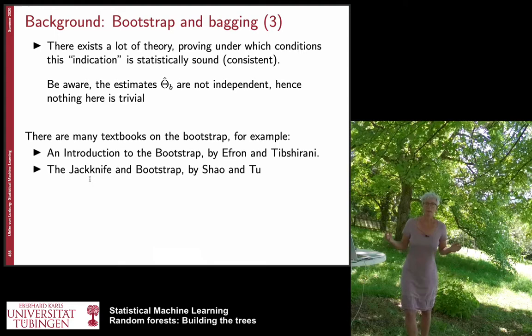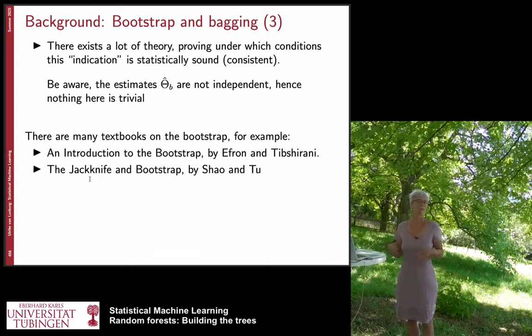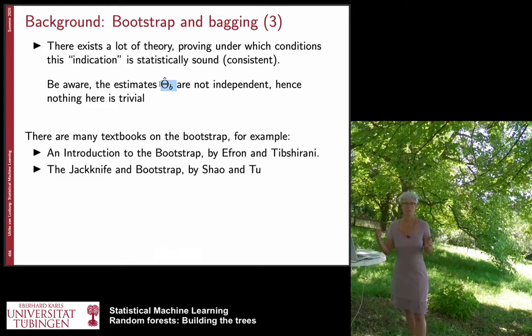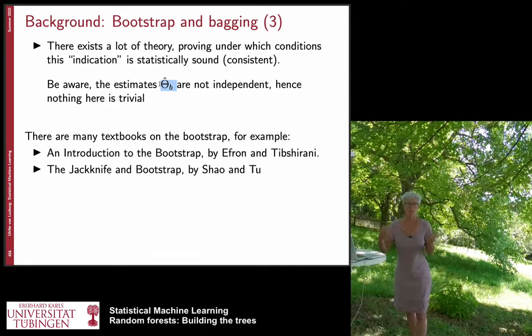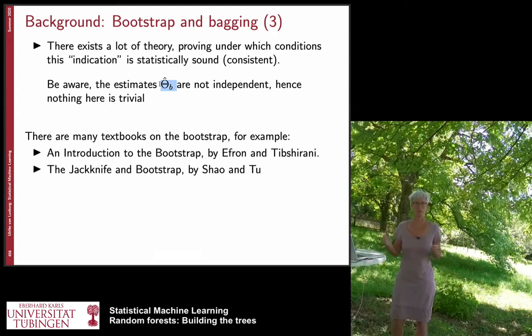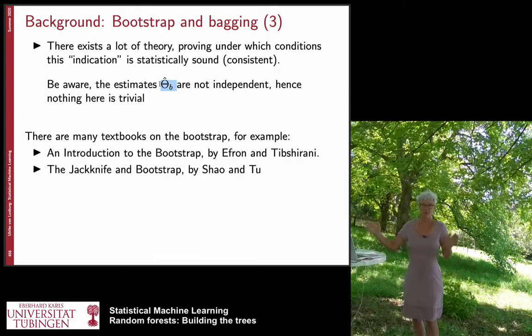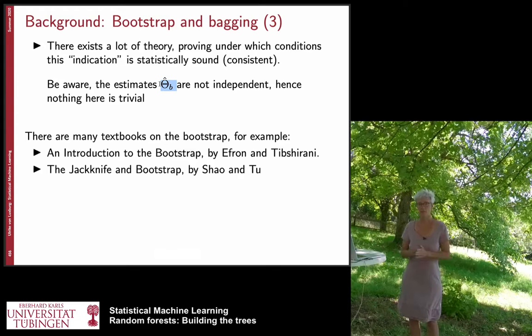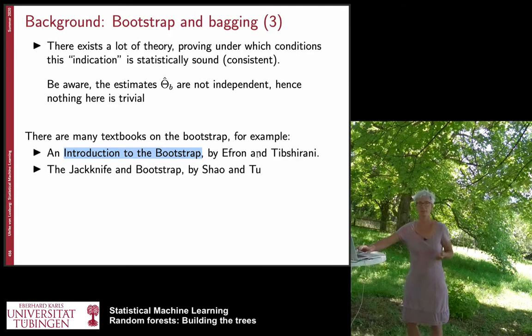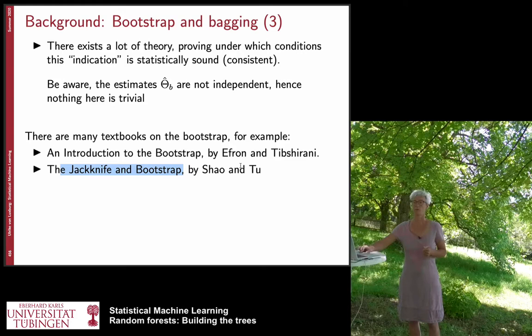There exists a lot of theory in the statistics literature proving under which circumstances this approach leads to consistent estimates. What makes the literature complicated is that the estimates theta-b are not independent — the sub-samples overlap significantly. The most complex part is disentangling this dependency and finding when consistency still holds. There are important textbooks on this: The Introduction to the Bootstrap by Efron and Tibshirani, and The Jackknife and Bootstrap by Shao and Tu.